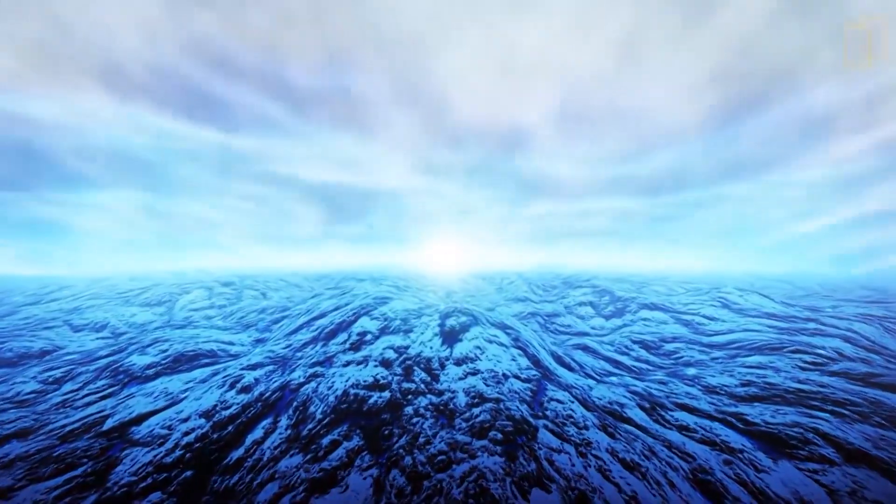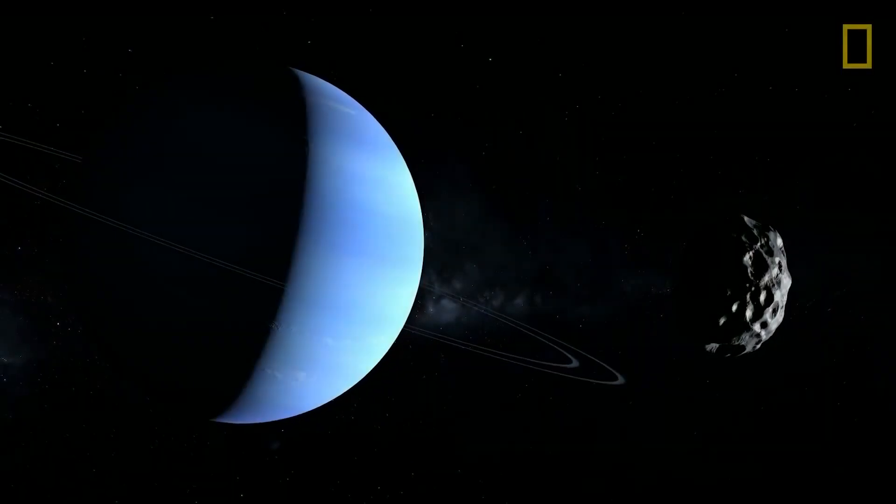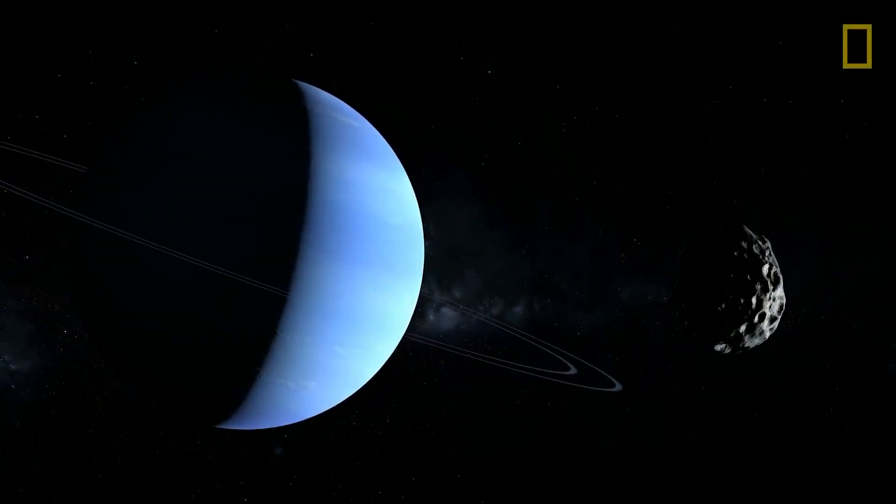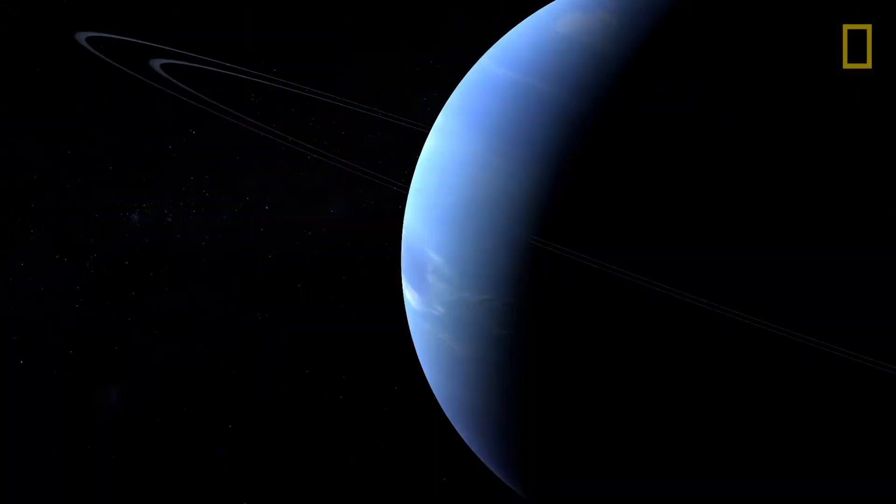Hydrogen was also found to be the most common atmospheric element, although the abundant methane gave the planet its blue appearance. Voyager 2 passed over the north polar region, using the planet's gravity to redirect the trajectory for a final encounter with Neptune's largest moon, Triton, which turned out to be one of the most interesting moons in the solar system.